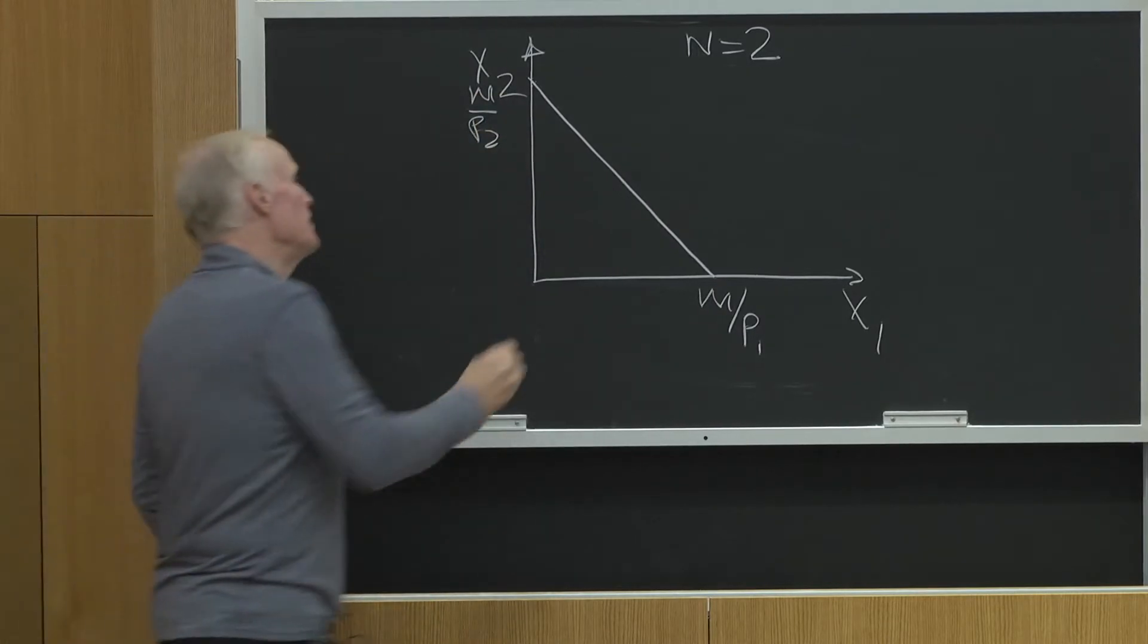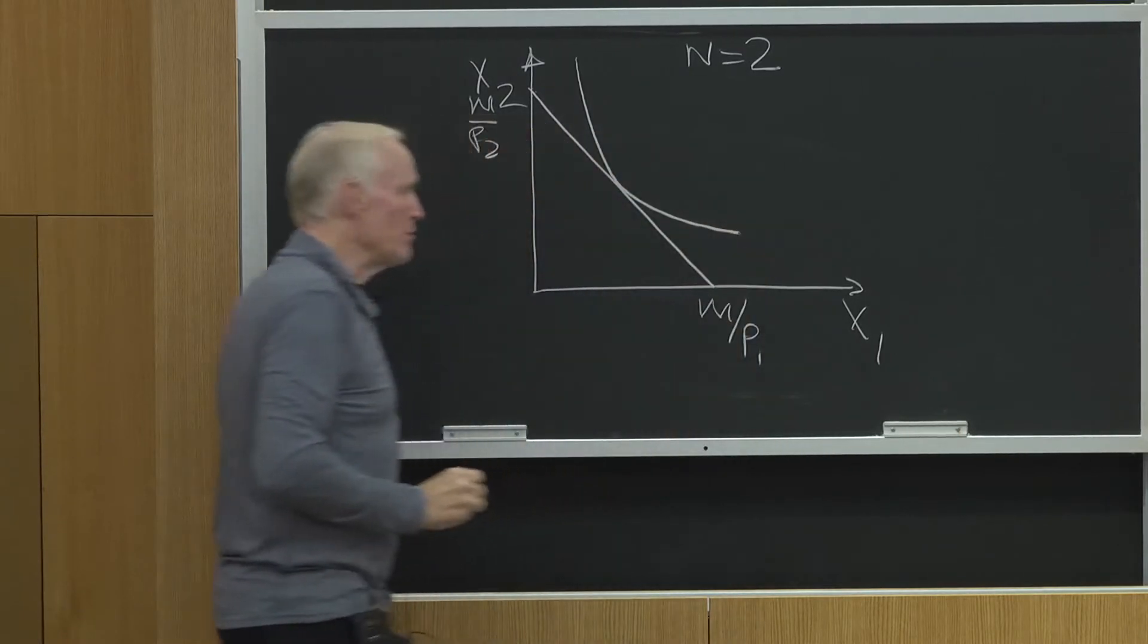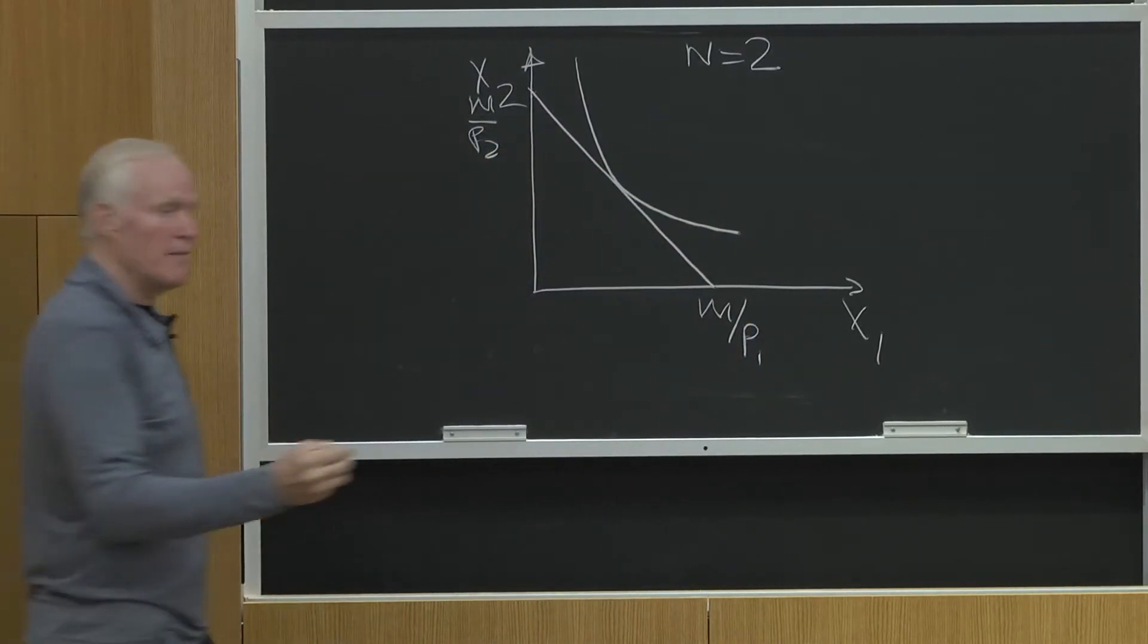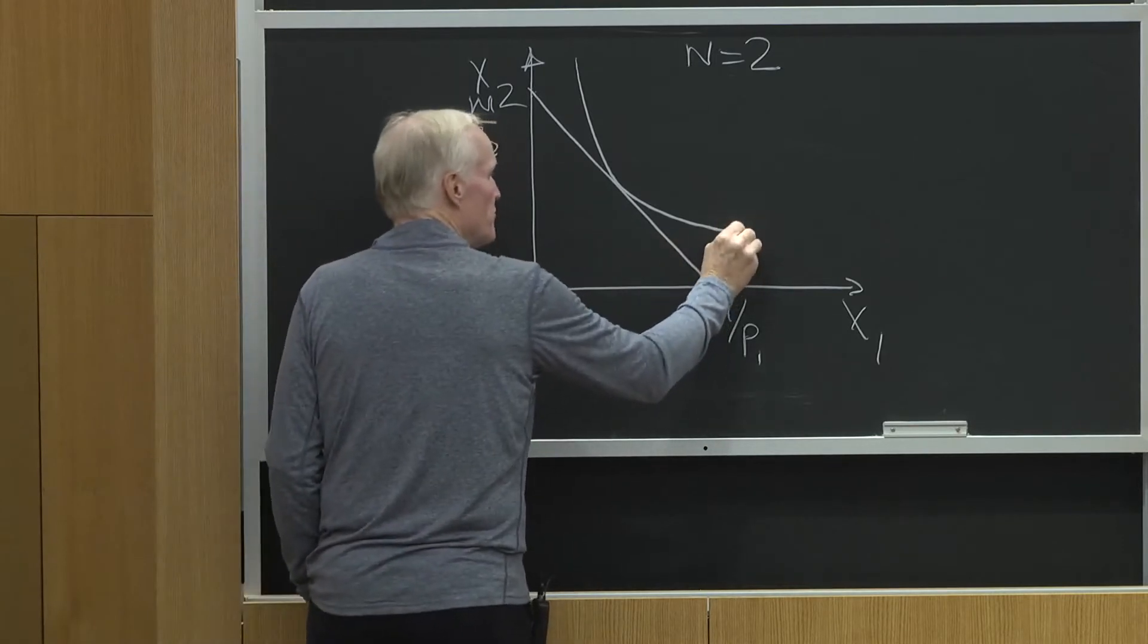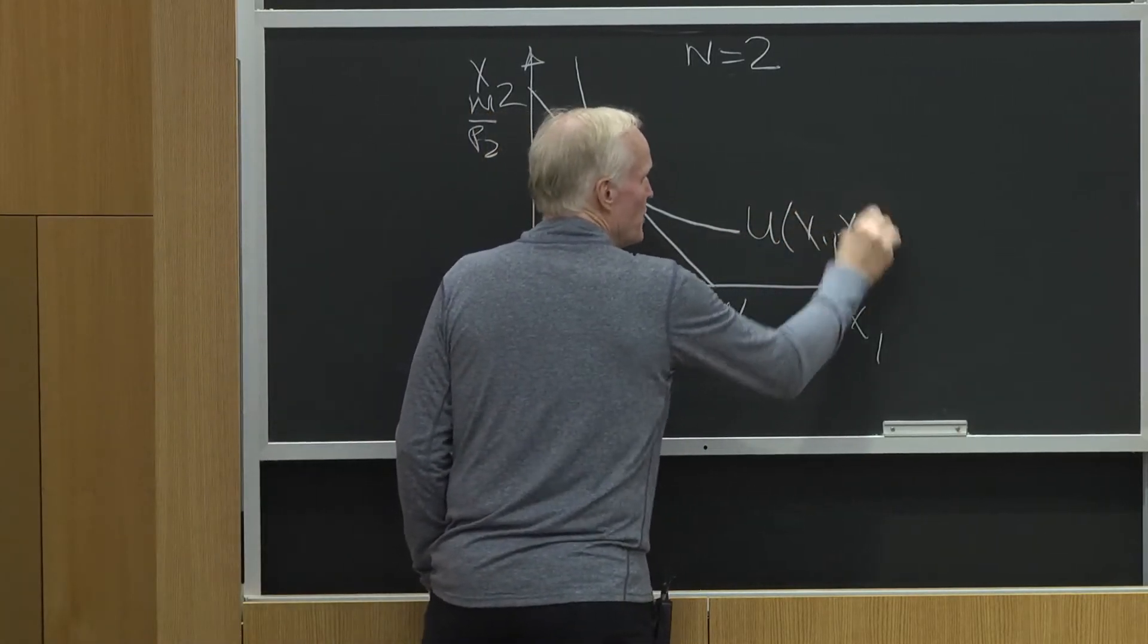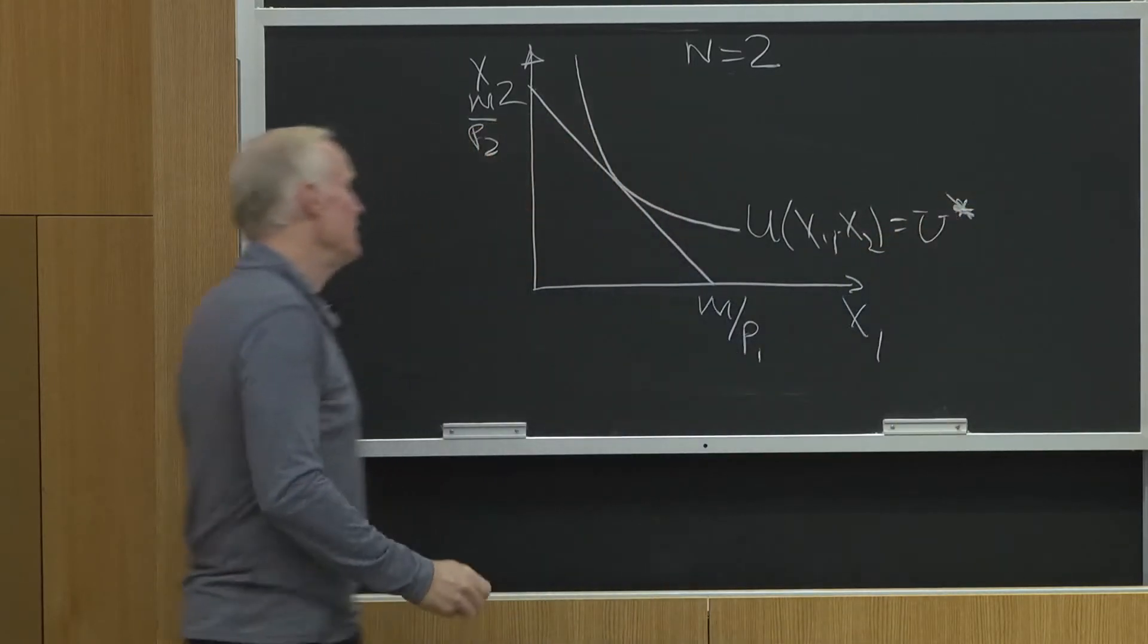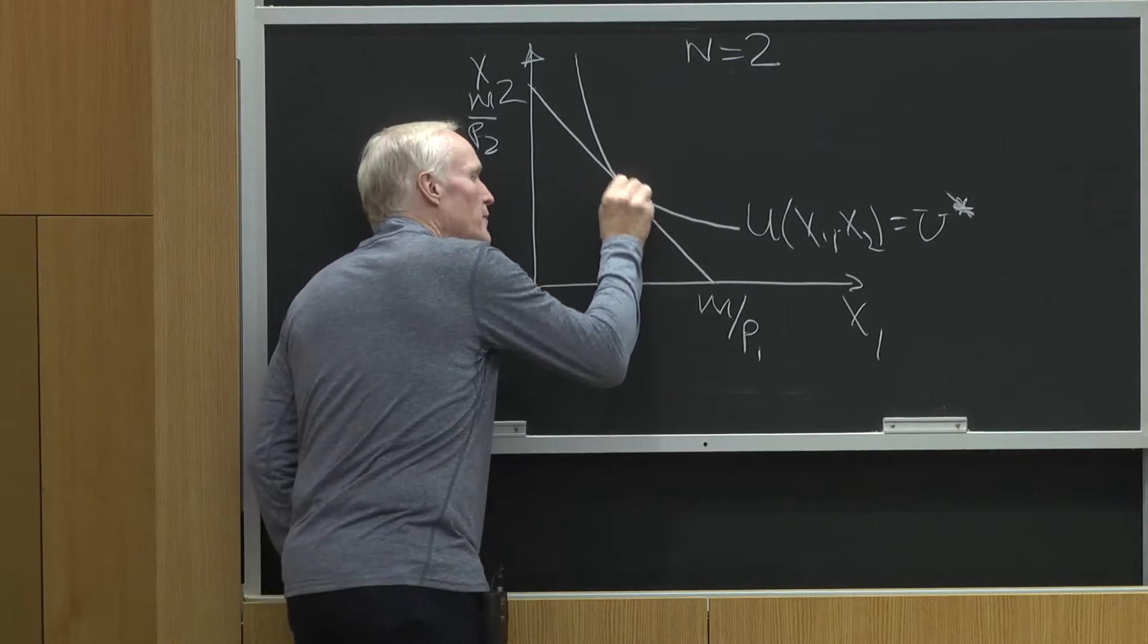My equilibrium looks like that. This is my equilibrium indifference curve that I'm on. This is U of X1, X2 equals some U star, which is the maximum utility I can obtain. And there's my equilibrium right there.